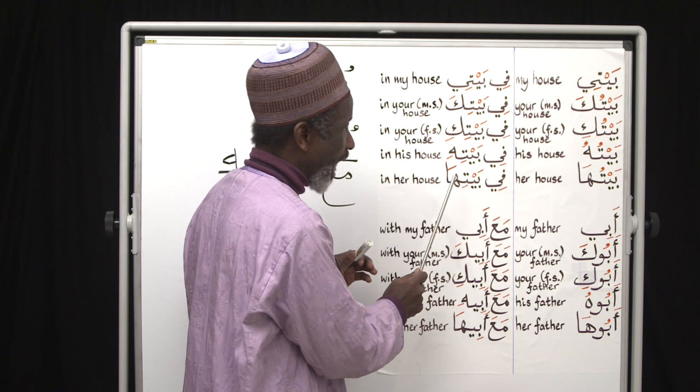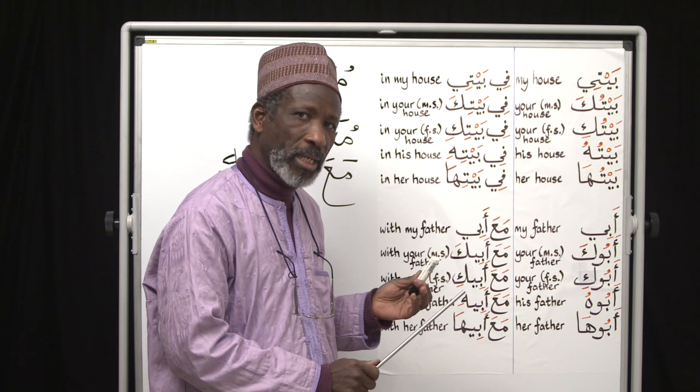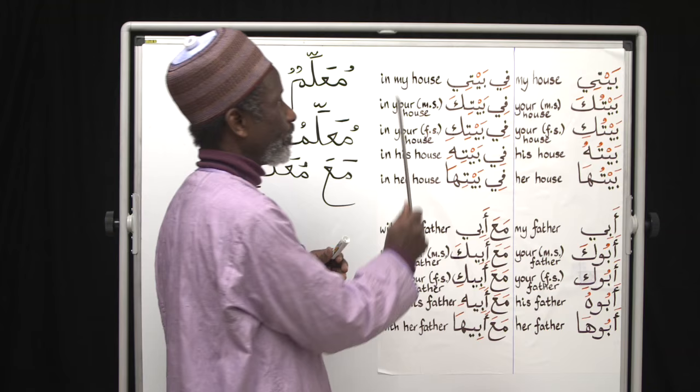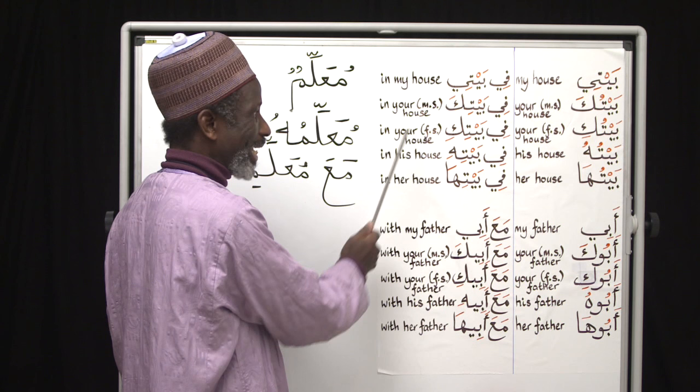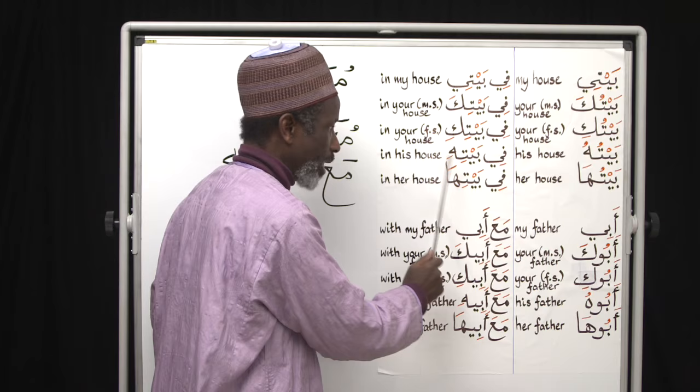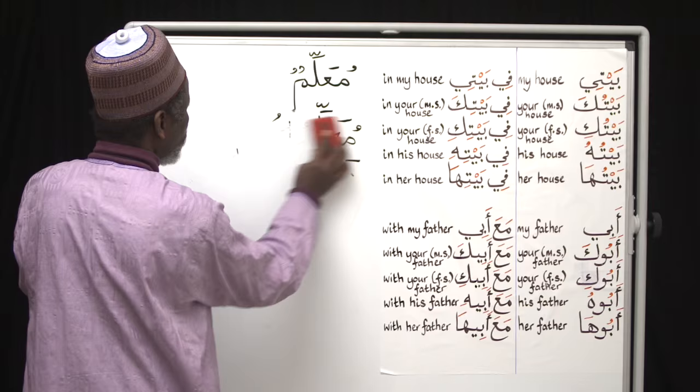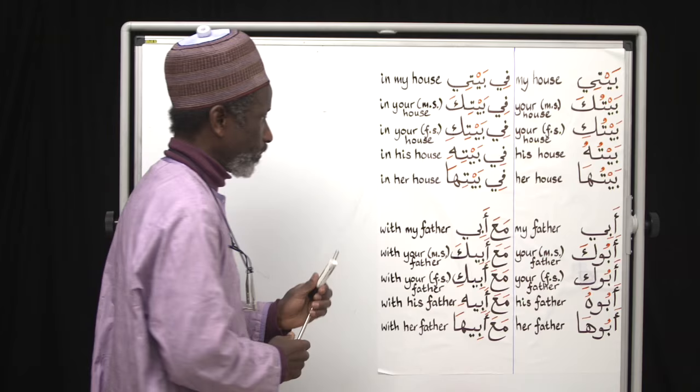As for baituha — 'her house' — nothing changes. There is no effect. You retain baituha with the 'ha'. The 'ha' is always well-behaved, never misbehaves. But 'hu' sometimes misbehaves. So fi baitihi is 'in his house', and fi baitiha is 'in her house'. That has now been explained.